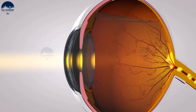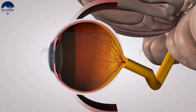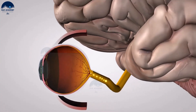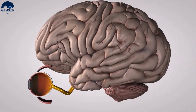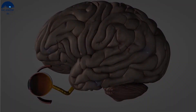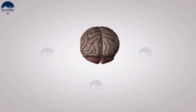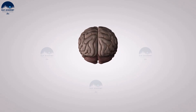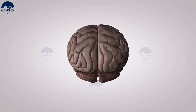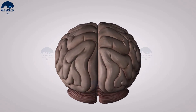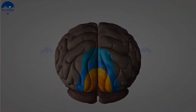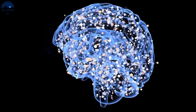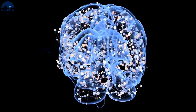The retina is a delicate membrane having an enormous number of light-sensitive cells. These light-sensitive cells get activated upon illumination and generate electrical signals, which are sent to the brain via optic nerves. The brain interprets these signals and finally processes the information so that we perceive objects as they are.